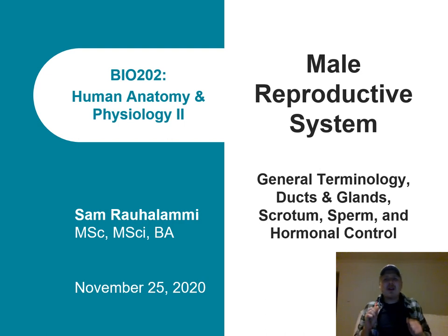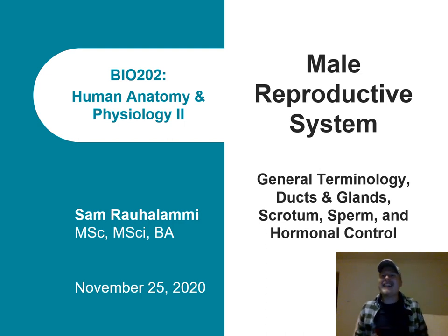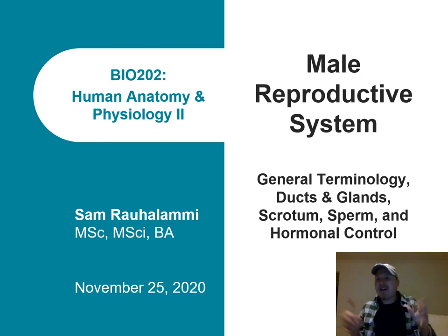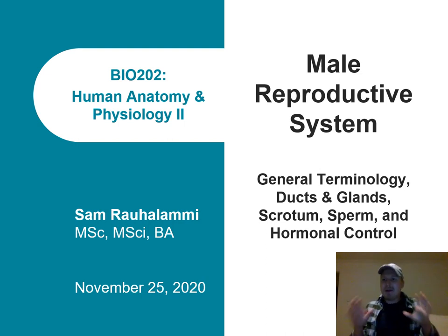You will notice that the male system is much more simple than that of a female. This is especially true when it comes to the hormonal changes and regulation, where we have quite a lot to look at in females — for example, the menstrual cycle. So this section is going to be a little more brief in nature, but we will make it work as always.